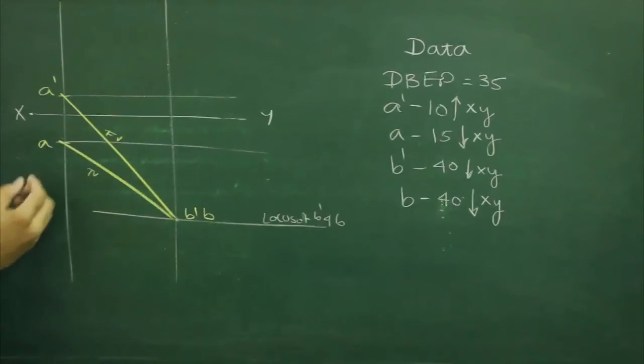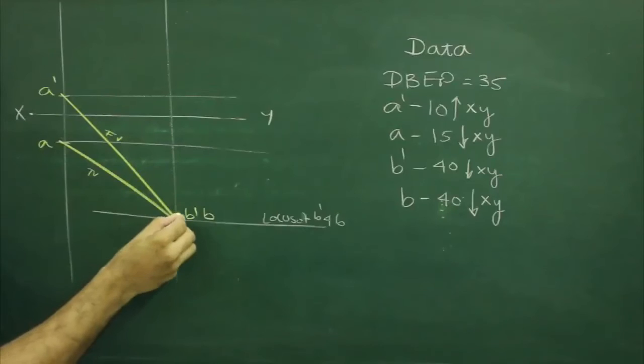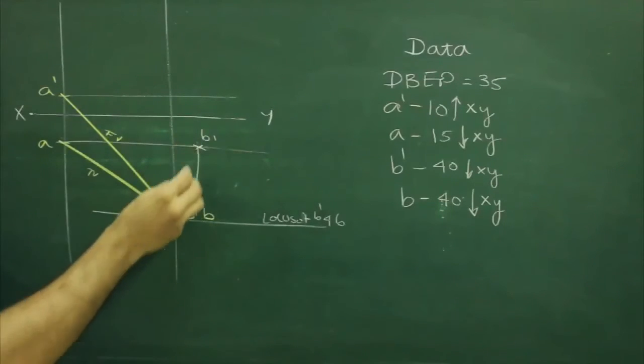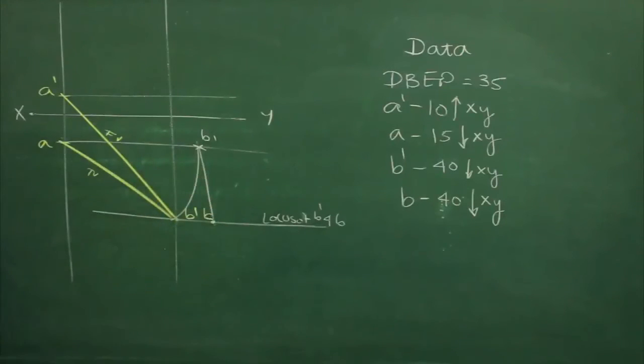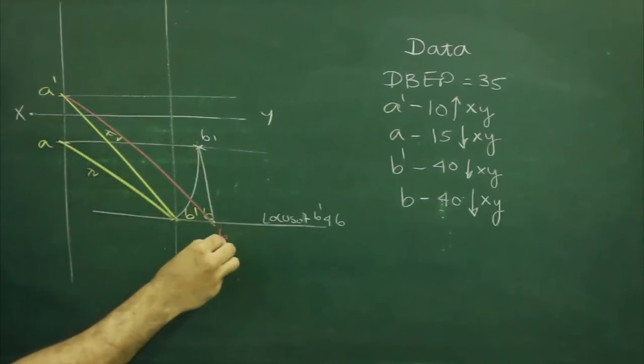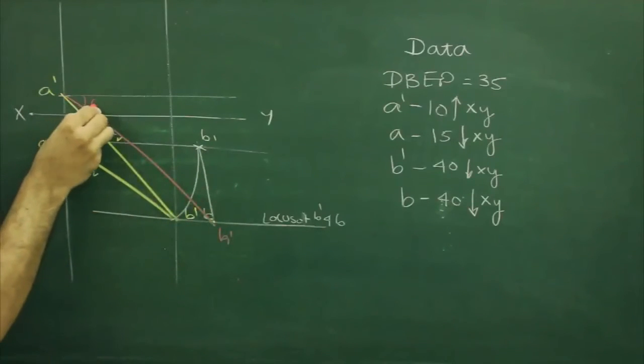So, again we will follow the same way. We will take A to B, rotate tip A, so that will be b1. Then we will project down, wherever it will cut, that will be true length, that is b1. That angle will be theta.